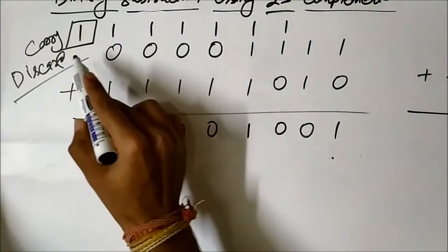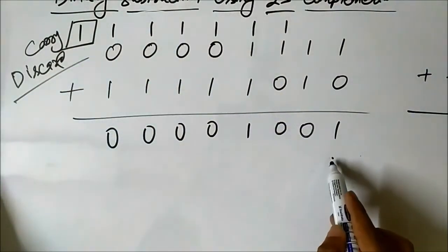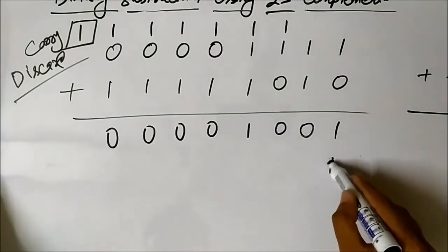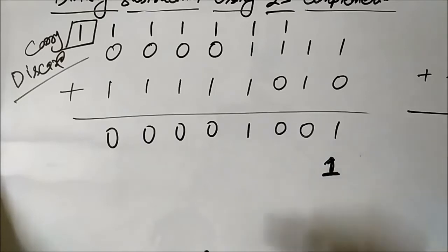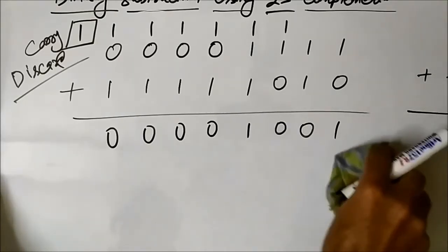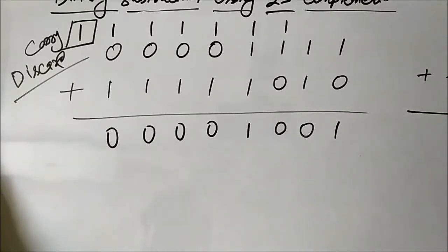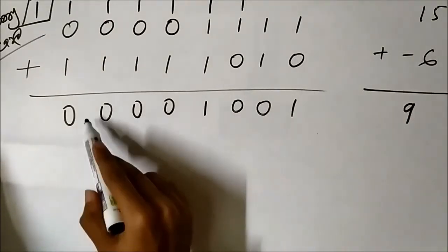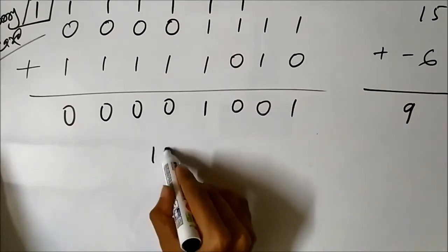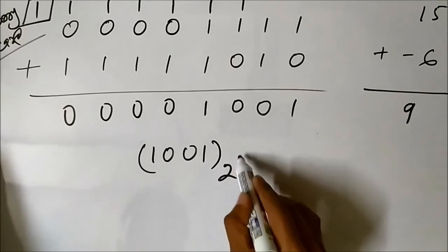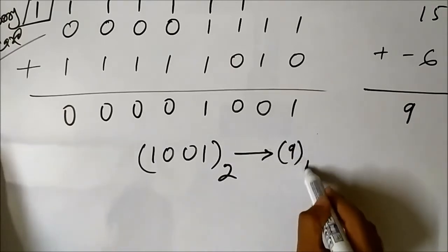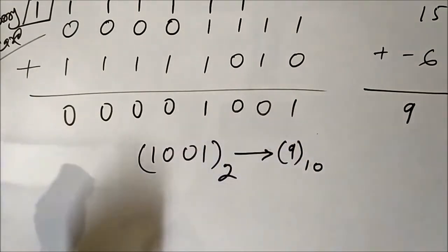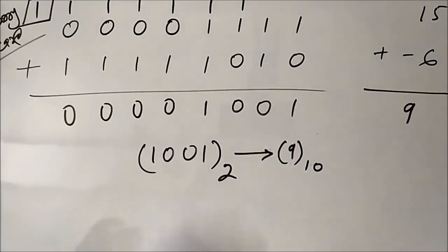We discard this carry bit. In 1s complement the carry used to be added to the LSB, but in 2s complement we ignore it. So this is the final result. 15 minus 6 is 9, and here we have 0 0 0 0 1 0 0 1 — so 1 0 0 1 in binary is 9. Our answer is correct.